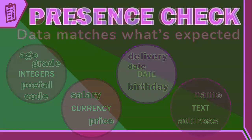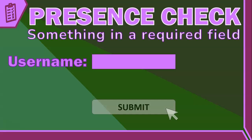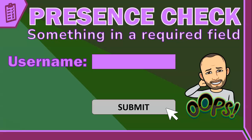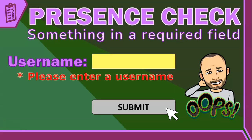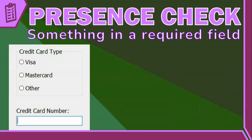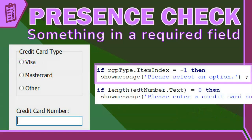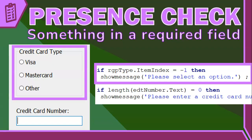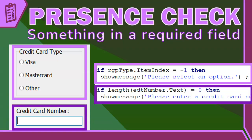Then we have the presence check — it simply checks that you've entered something in a required field. Imagine filling out a form and forgetting to enter your username; a presence check will prompt you saying you forgot to fill it out. Most systems use an asterisk to indicate a compulsory input. In a programming language like Delphi, we can check that a radio group's item index is negative one (meaning no option was selected) or check if the length of an edit control is zero, meaning nothing was entered.